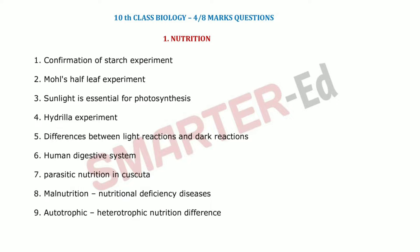An important sub-question here is: why are we using KOH — potassium hydroxide solution — in this experiment? The third question is about sunlight being essential for photosynthesis. We know sunlight is one of the important factors for photosynthesis, and we need to write how sunlight is necessary for photosynthesis.